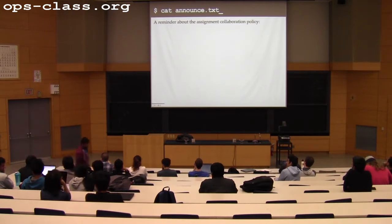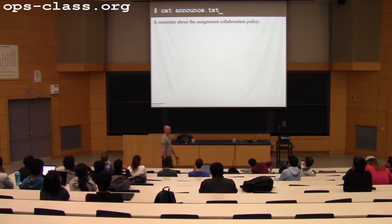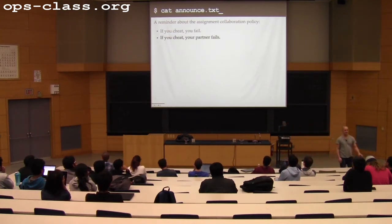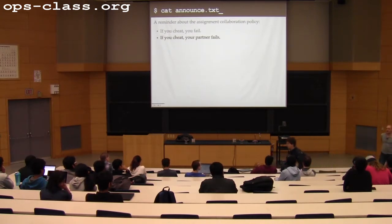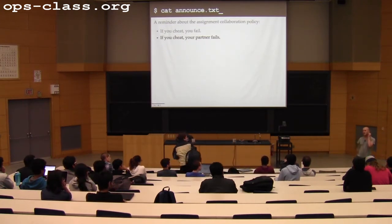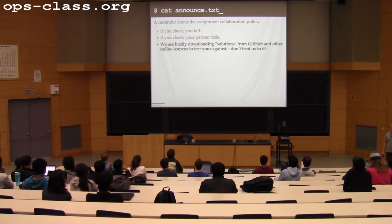I want to remind people about the collaboration policy for this course. If you cheat, you will get an F in the course. If you cheat, your partner will also get an F. You guys are jointly responsible for work that you submit as a team. So if your partner goes off for five minutes and comes back with a fully working assignment three, you might want to have a conversation about where it came from.